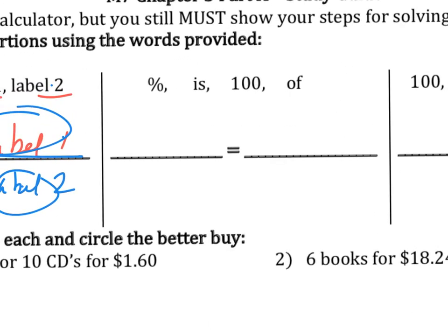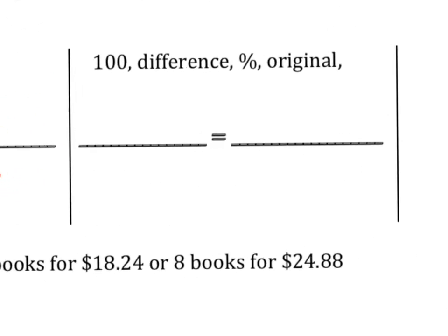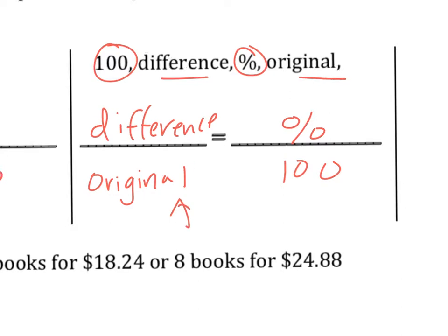These ones you should kind of know. Percent always goes over 100. And 'is' always goes over 'of'. You could also put percent over 100 here, and is over of over here — either way. Percent over 100. Difference over original — original always goes on the bottom. So the difference of something is a part, and a part goes over the whole or the original. That's all that's telling you to do in that top part.